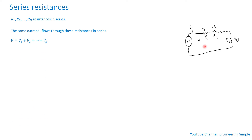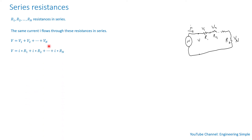In a series circuit, the same current flows through all elements. So the applied voltage V is just V1 plus V2 plus Vn. We also know that V1 equals the current I times R1, V2 equals I times R2, and Vn equals I times Rn.